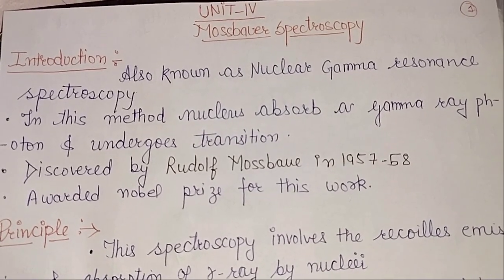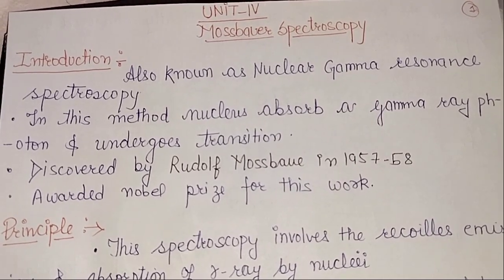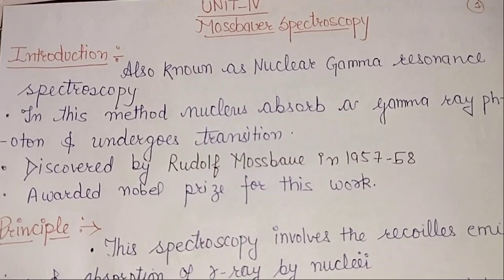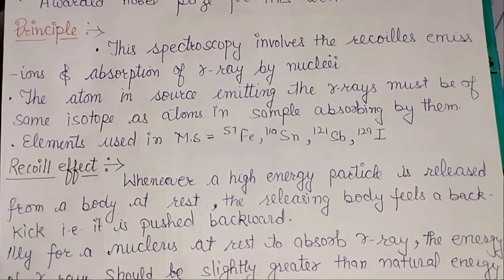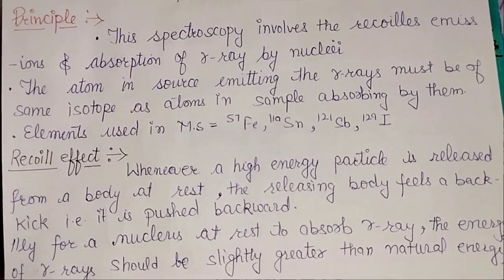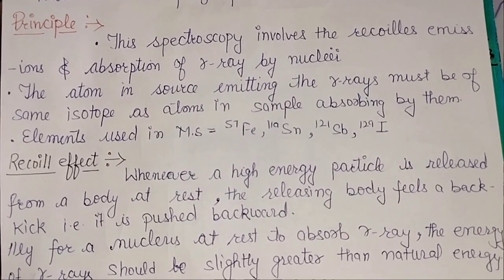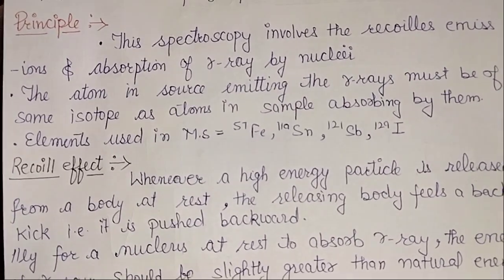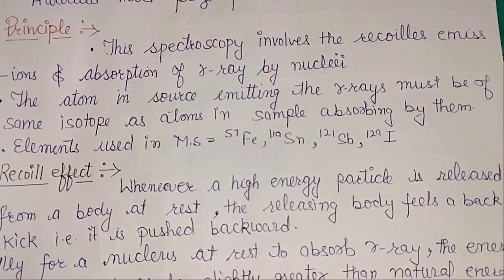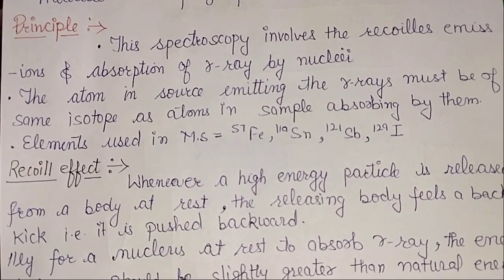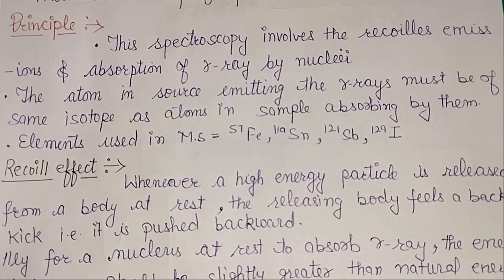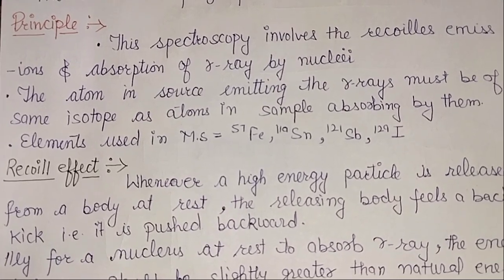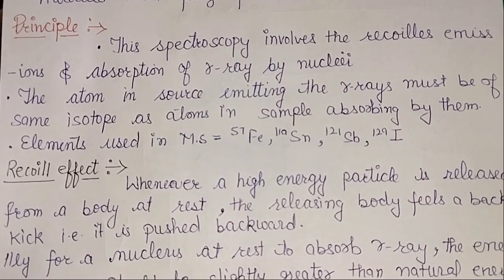Now come to its principle. In principle you might feel complications, but if you understand it, it is quite simple. The principle of Mossbauer spectroscopy involves recoil emission and absorption of gamma rays by nuclei.